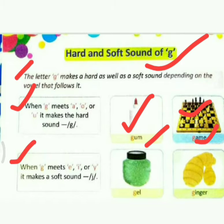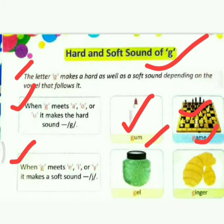Next: when G meets E, I, or Y, it makes a soft sound. When our letter G meets E, I, or Y, then the sound becomes soft — that means J.